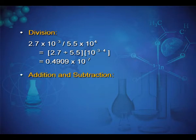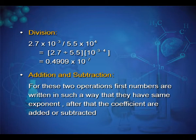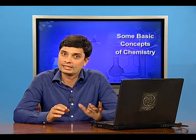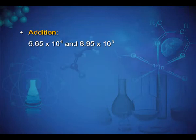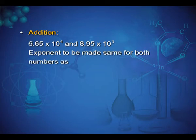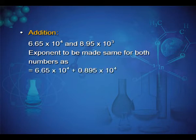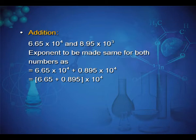Addition and subtraction: for these operations, first numbers are written such that they have the same exponent. After that, the coefficients are added or subtracted. Addition example: we have to add 6.65 × 10^4 with 8.95 × 10^3. First, exponents are made the same: 6.65 × 10^4 + 0.895 × 10^4, which equals 7.454 × 10^4.